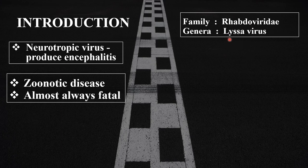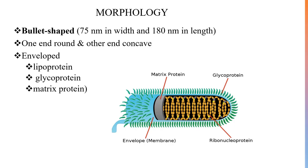The genus is Lyssavirus — 'lyssa' means madness. Coming to the morphology, it is bullet-shaped as mentioned earlier. The width and length are important: 75 nanometers and 180 nanometers. Note that viral dimensions are measured in nanometers.